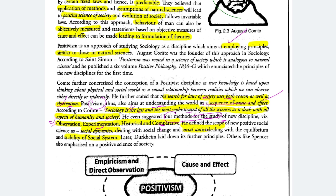He said the scope of the new positive social science is social dynamics and social statics — we have discussed this in the last lecture. Later, Durkheim laid down further principles. Others like Spencer also emphasized on the positive science of society. Spencer's topic we discussed last time, where I mentioned the analogy of the body and society.